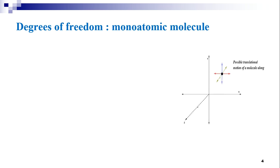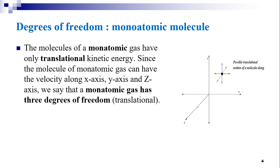Let us consider the degrees of freedom of a monoatomic molecule. The possible motions of a monoatomic gas molecule are shown in the figure, represented in the Cartesian coordinate system along three coordinate axes. Translation can be anywhere in the three-dimensional space. The molecules of a monoatomic gas have only translational kinetic energy. Since the molecule can have velocity along the x-axis, y-axis, and z-axis, a monoatomic gas has three degrees of freedom — only translational.